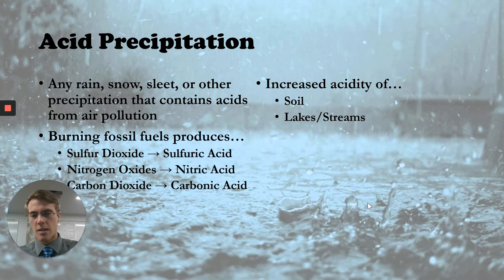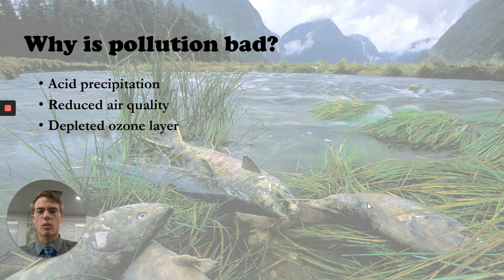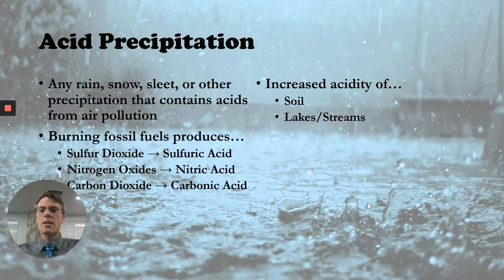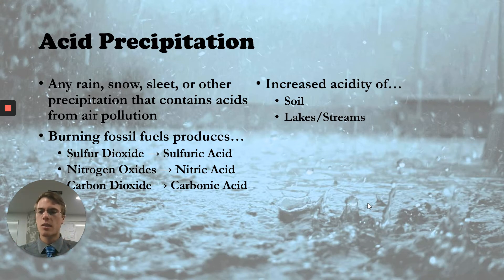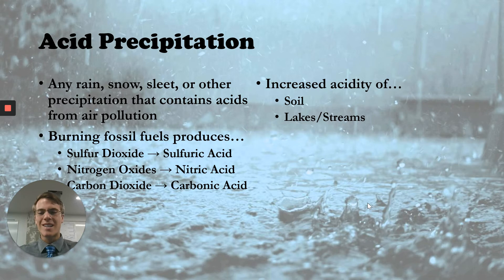Looking at this picture, we see fish lying dead — this is actually a result of acid rain in Alaska that killed a lot of salmon in a stream. The way this happens is that fossil fuels produce gases like sulfur dioxide, nitrogen oxide, and carbon dioxide, which react in the air and create acids. For example, sulfur dioxide produces sulfuric acid, and these acids mix with rain, snow, or sleet and impact our lakes, streams, and soil.